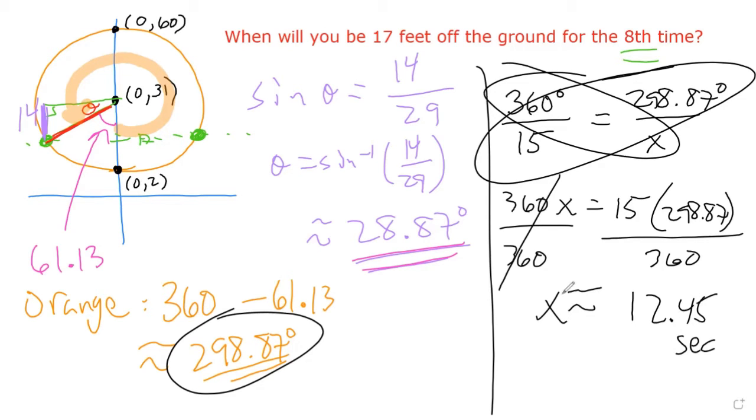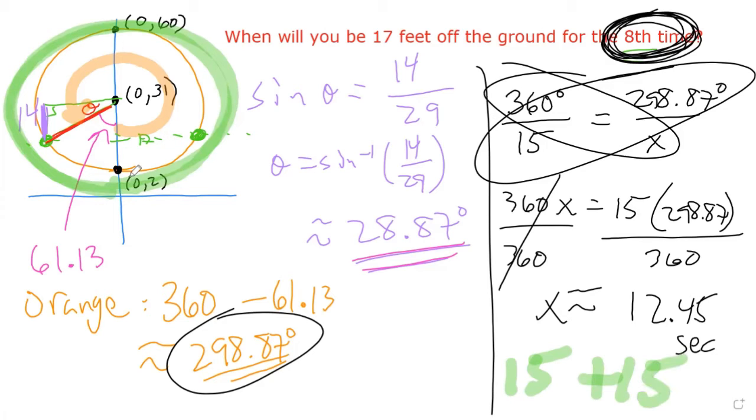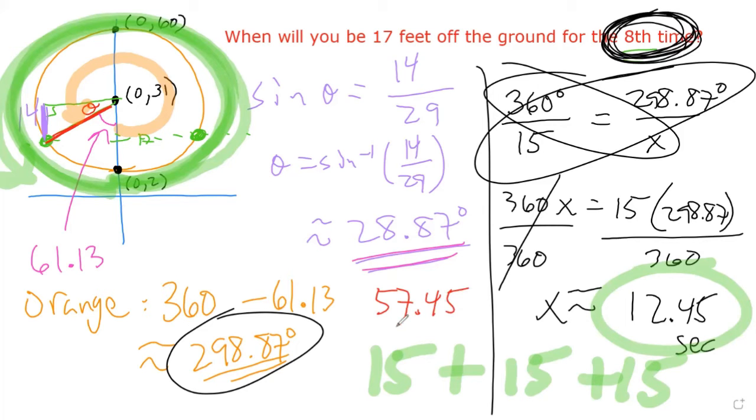But notice what this is. This 12.45 is only after you've done how many complete revolutions? We want eight visits. If we reset this whole situation, let's go around the world one time, that's once around and that's 15 seconds. Then let's go around again for our third and fourth visit, that's another 15. Go around again for our fifth and sixth visit, that's another 15. And then finally, our seventh and eighth visit is that additional 12.45. So we have to add 15 plus 15 plus 15 plus 12.45, which is how we got a final answer of 57.45 seconds.